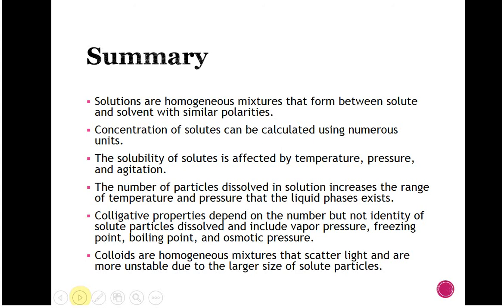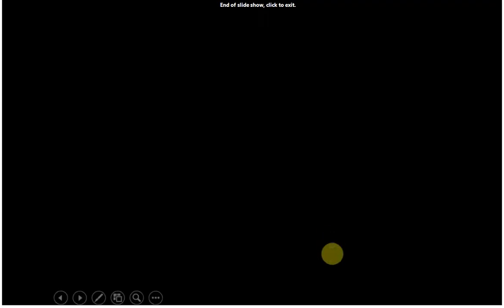Anyway, the number of particles dissolved is what affects colligative properties the most. It's not the identity. You need to be able to do calculations with vapor pressure, freezing point depression, boiling point elevation, osmotic pressure, those things. And then colloids are homogeneous mixtures that scatter light. They are still homogeneous but they're also unstable due to solute size. So, that is it for unit four.